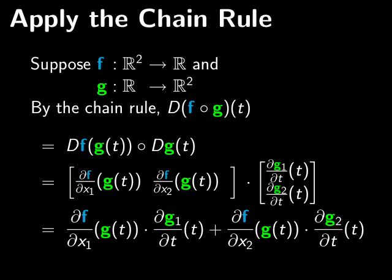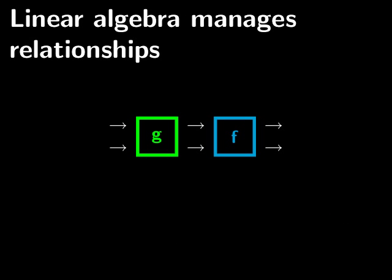And the important thing to realize here is that wiggling the input t is affecting both g_1 and g_2. The single input of g affects both of those outputs. Both of those outputs then go to affect both inputs of f, which then go to affect the output of f. And the chain rule adds together these effects. That's where we've got these two different terms here.